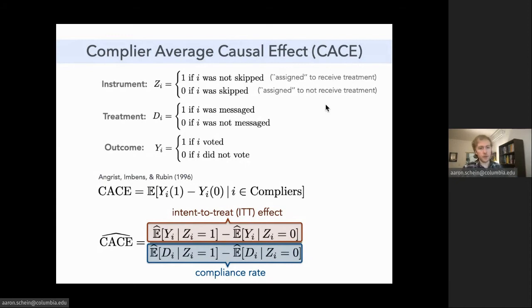If we have a binary instrument and a binary treatment and outcome, this maps us to a very standard setting where we can identify what's called the complier average causal effect. This is the average causal effect in the subpopulation of subjects who are compliers. Compliers are subjects who would receive the treatment if, and only if they were assigned to. We can consistently estimate the CACE using the IV estimator here.